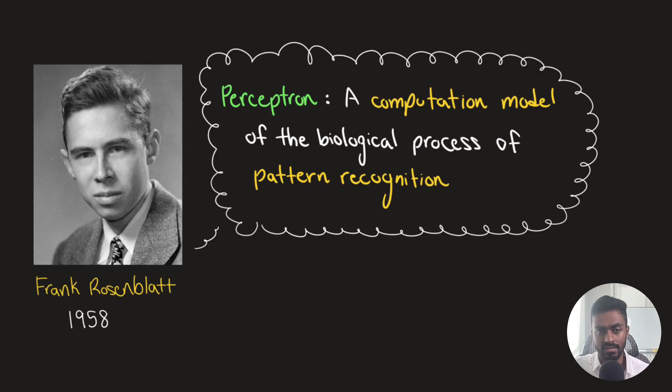So in 1958, Frank Rosenblatt invented the perceptron. The perceptron was a computation model of the biological process of pattern recognition. A model is a simplified representation of a complex process, in this case pattern recognition. Computation model means that we can boil this down into a set of sequence of steps, calculations, or computations.